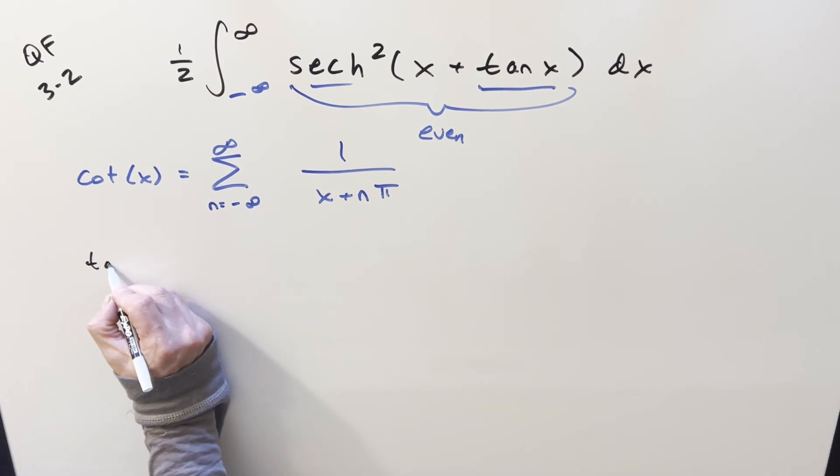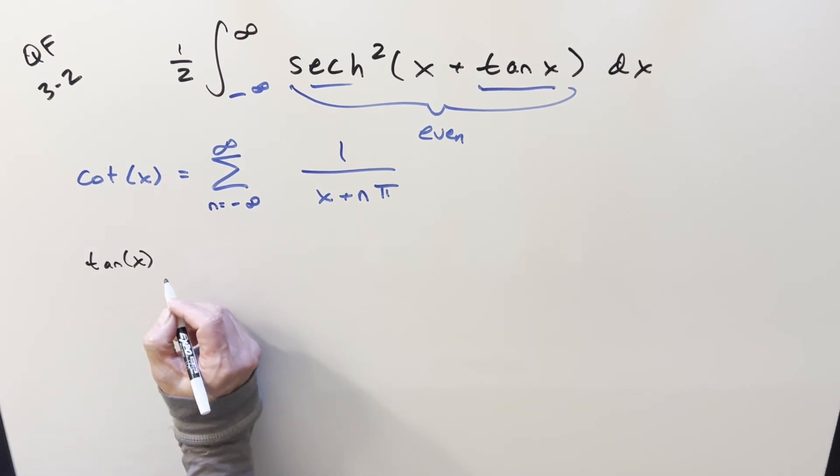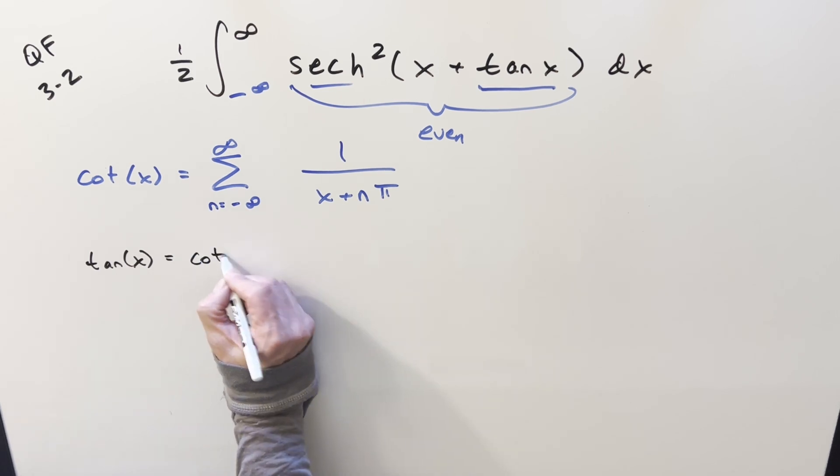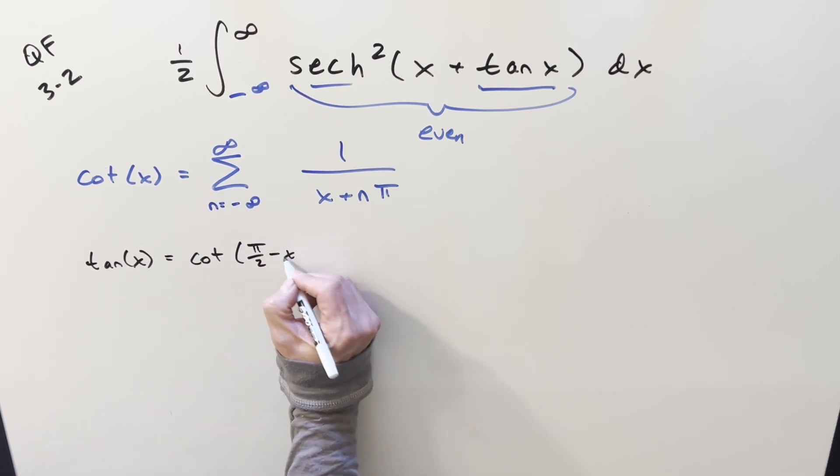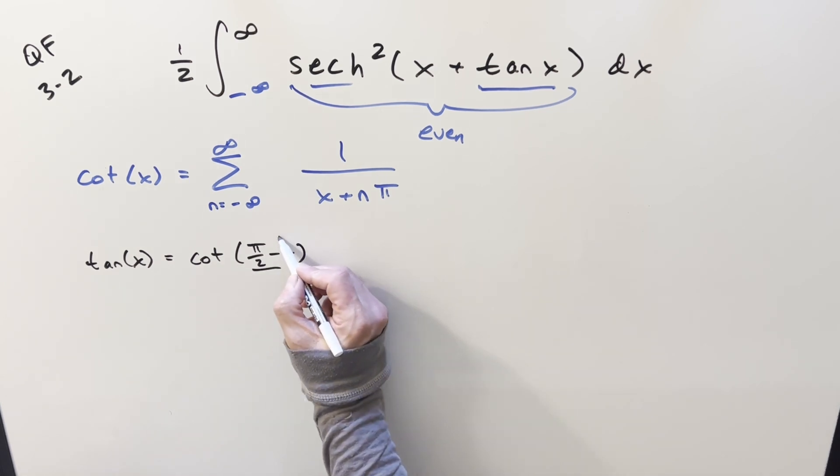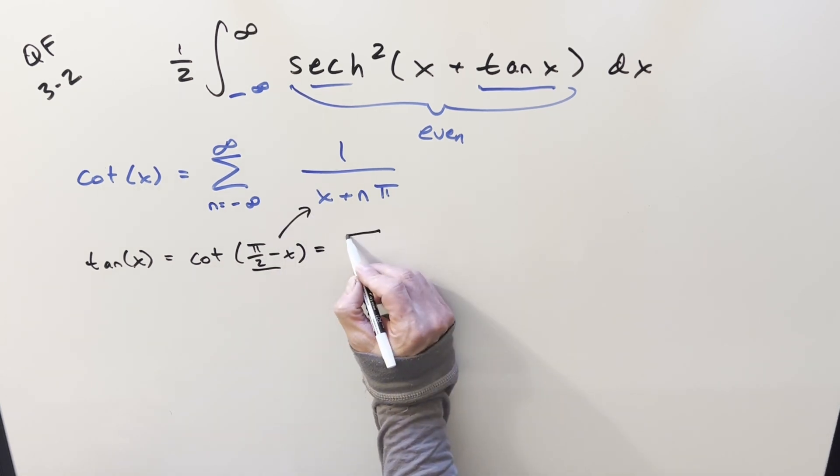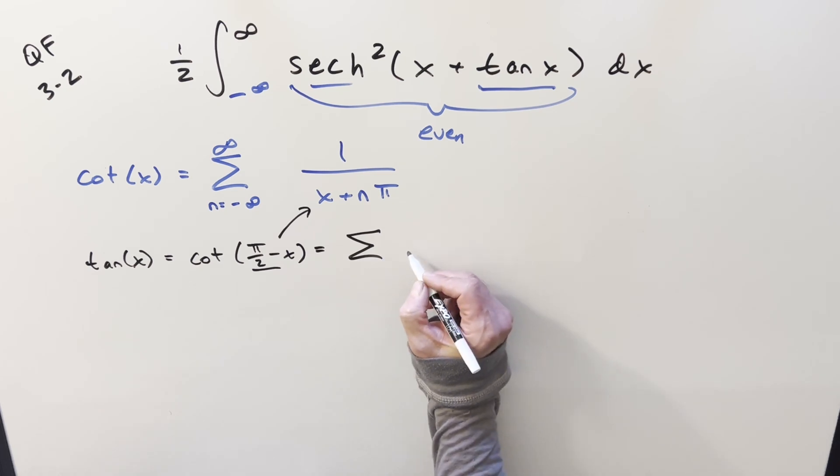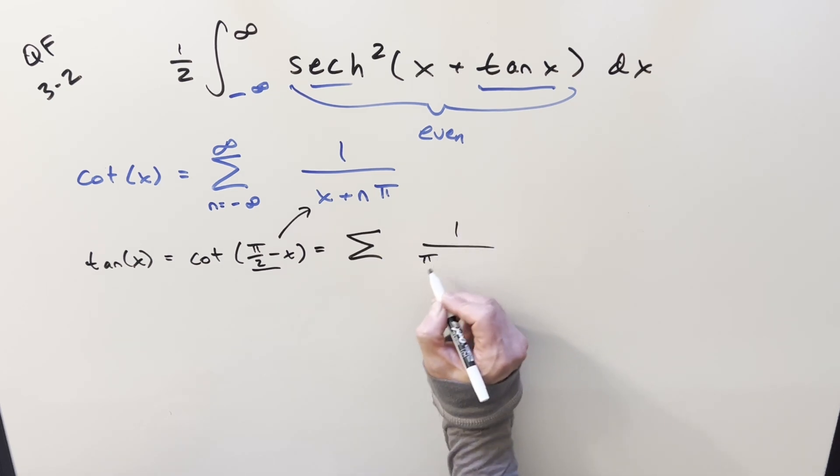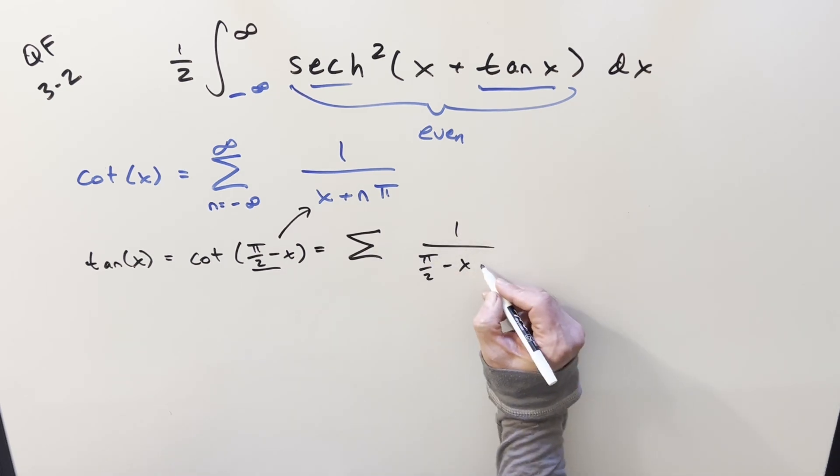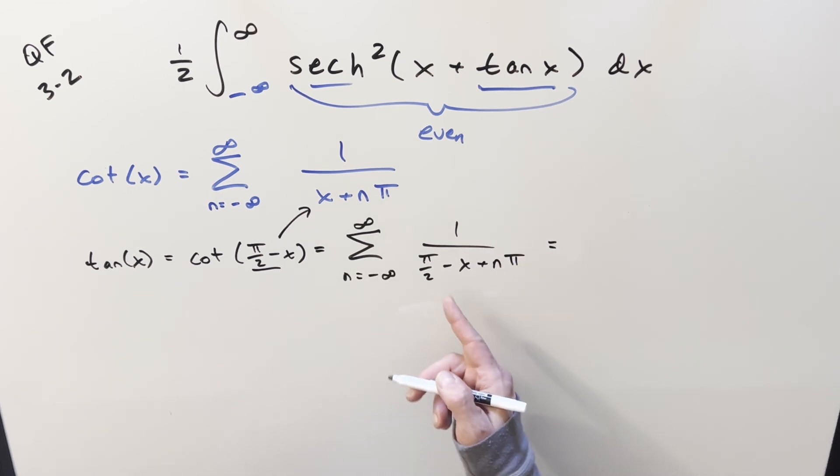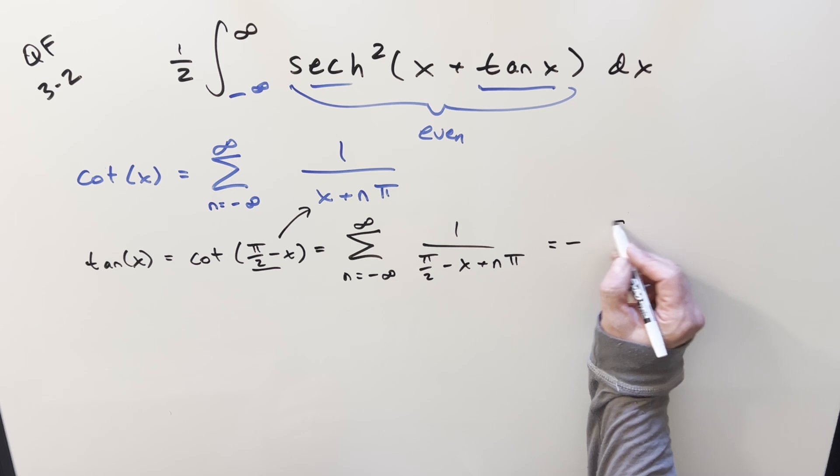For tangent what we can do is use the complementary angle formula so tan x is going to be the same thing as cotangent pi over 2 minus x. And so then with this all I need to do is take the input and plug it into our sum here. And so now we're going to have this sum but we're going to have 1 over pi over 2 minus x plus n pi. Then on this thing I can just pull a minus sign out of it just to kind of reverse the sign and everything.